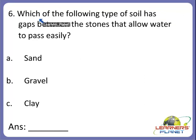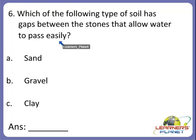Which of the following type of soil has gaps between the stones that allow water to pass easily? Is it A. sand or B. gravel? Yes, it is gravel — B is the correct answer. Gravel is a type of soil that allows water to pass easily and has gaps between the stones. Sand also allows water to pass easily, but sand has coarse particles.